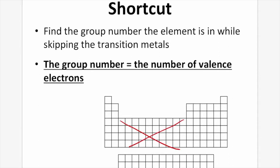So let's try. The group numbers are 1, 2, skip the transition metals, then 3, 4, 5, 6, 7, 8. Those numbers represent the valence electrons for all the elements in that group. So all elements in group 1 have one valence electron, group 2 have two, group 3 have three, and so on all the way up to 8.